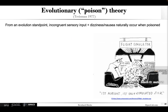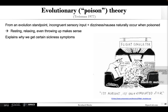The evolutionary or poison theory is another prominent one. This goes back to trying to understand where the symptoms come from. From an evolution standpoint, incongruent sensory input and dizziness or nausea naturally occurred when you ate or drank something you probably shouldn't have. So it makes sense that you want to rest, relax, and maybe even throw up. This theory explains why we get certain sickness symptoms, but it doesn't have as clear implications. One suggestion is that incremental exposure to new users might help.